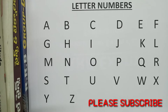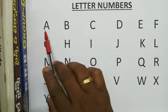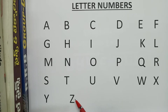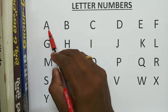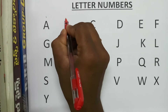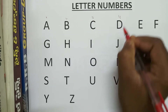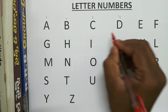Hi everyone. In the RRB exam, from letter series, one or two questions will definitely come. So letters and numbers — to remember easily, there are tricks. Let's see them now. A to Z total how many letters? 26 letters. A to Z. So A=1, B=2, C=3, D=4.